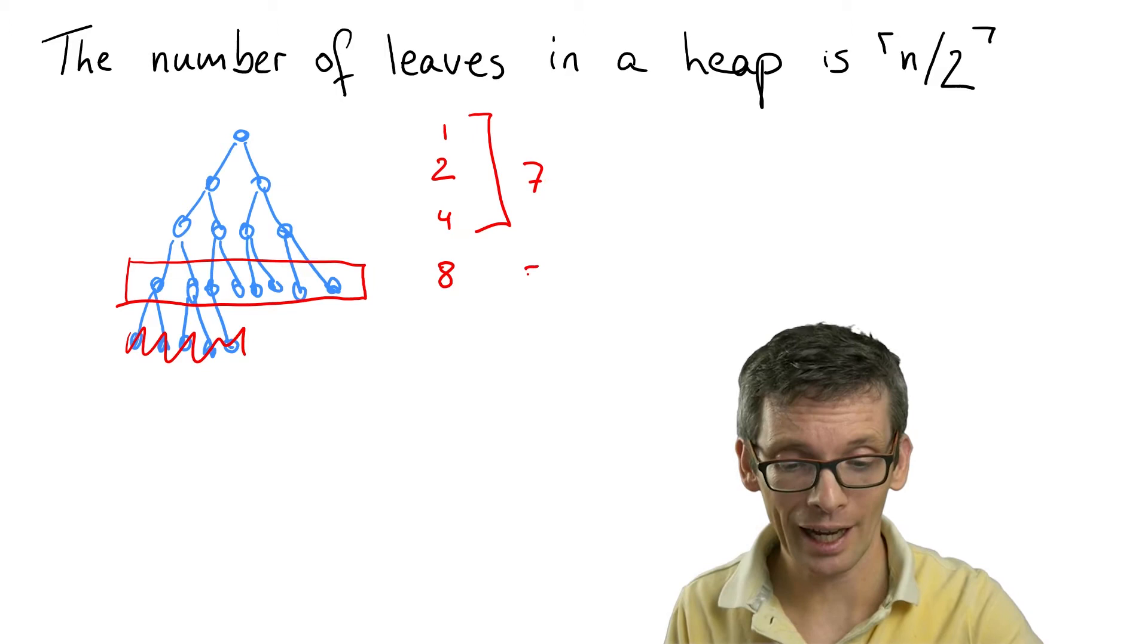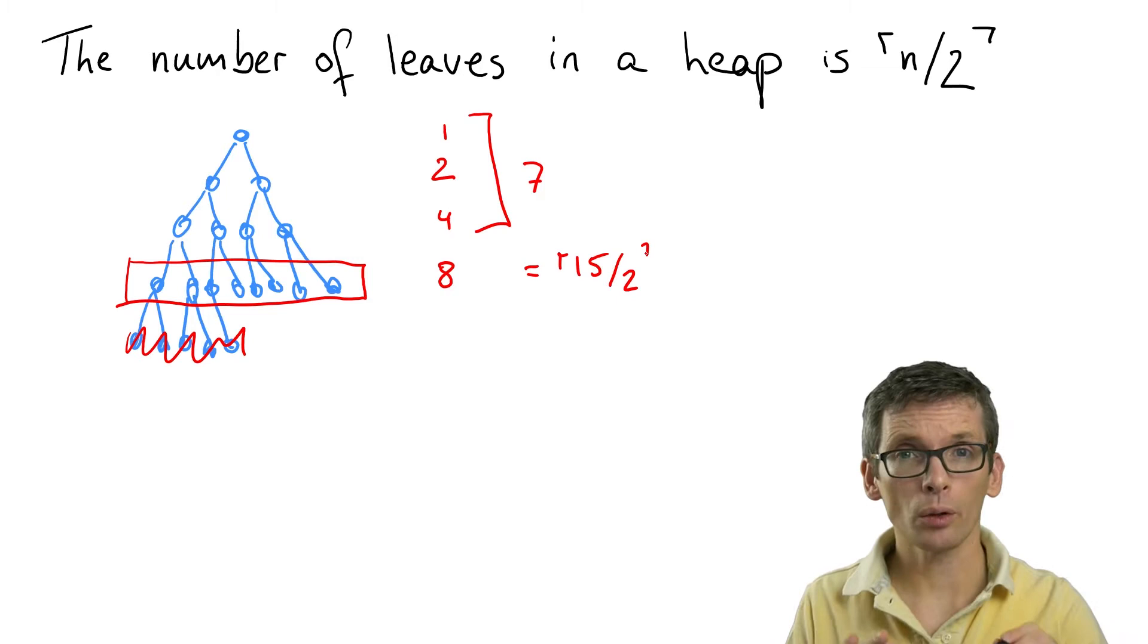But in the previous levels I have overall seven nodes, and seven plus eight is fifteen, and eight is indeed fifteen divided by two, rounded up.